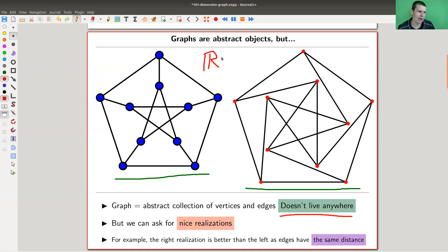We just like to think about them as living somewhere, and as soon as we do that, like here they live in R^2, we can ask the question, well maybe we want some nice realization. So those pictures are called realizations of the same graph, and we could ask for some nice realization, whatever nice means for now. For example, the right realization is slightly better in the sense that all edges have the same distance.